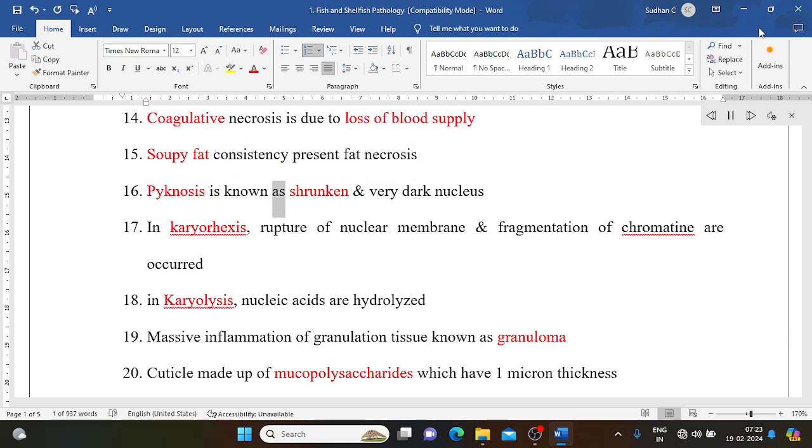Pyknosis is known as shrunken and very dark nucleus. In karyorrhexis, rupture of nuclear membrane and fragmentation of chromatin occur. In karyolysis, nucleic acids are hydrolyzed. Massive inflammation of granulation tissue known as granuloma.